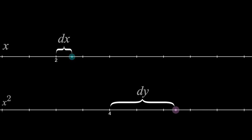In this case, it moved 4 times further than the dx. So the ratio, or derivative, at x equals 2 is 4.